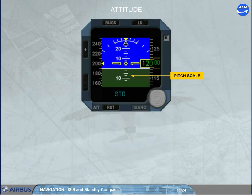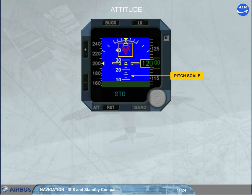The pitch scale has white marks every 2.5 degrees. Beyond 30 degrees, large red V-shaped arrowheads indicate that the attitude is excessive. Like on the PFD, they also indicate the direction to follow to resume normal attitude.